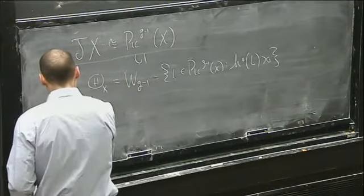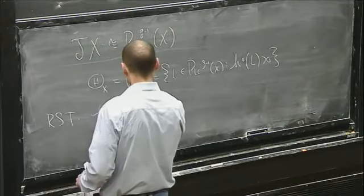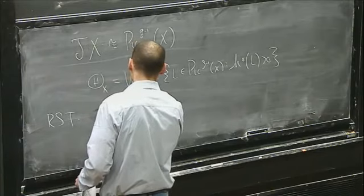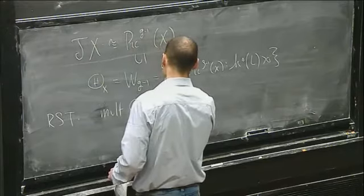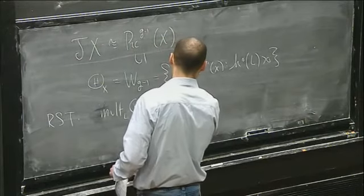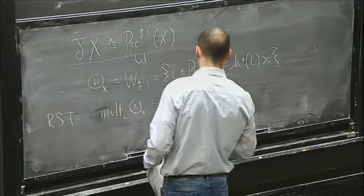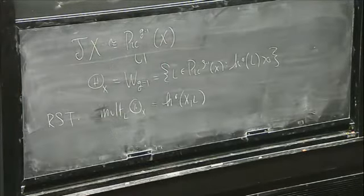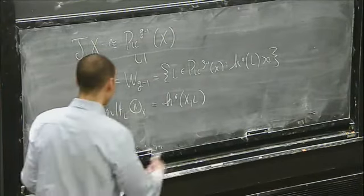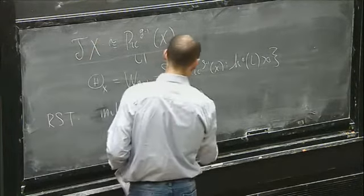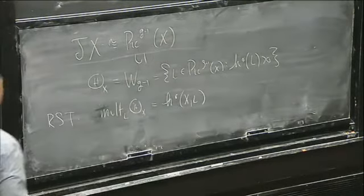One of the basic theorems is the Riemann singularity theorem, which says that if I'm interested in understanding the multiplicity of the theta divisor at a point L, this is given by the dimension of the space of global sections of the line bundle. By studying what types of spaces of global sections can occur for a line bundle on a curve, you can say a lot about the singularities of the theta divisor.